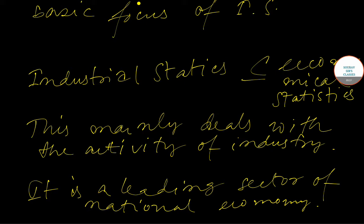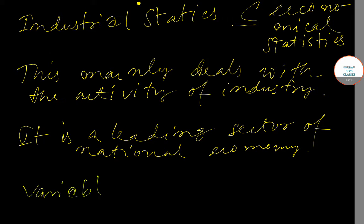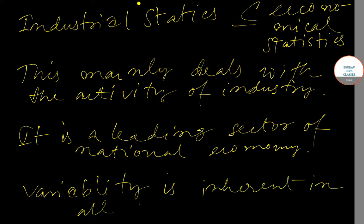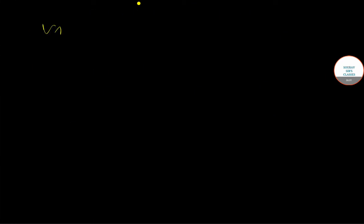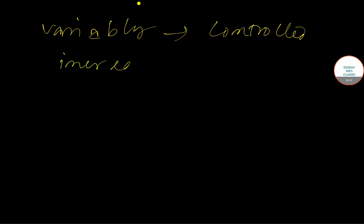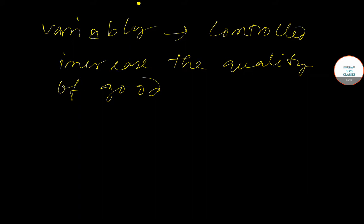As you all know, variability is inherent in all processes. In industrial statistics, we need to address this because variability is a very important part of manufacturing processes or service processes. This variability needs to be controlled — either to increase the quality of goods or to produce high quality goods.